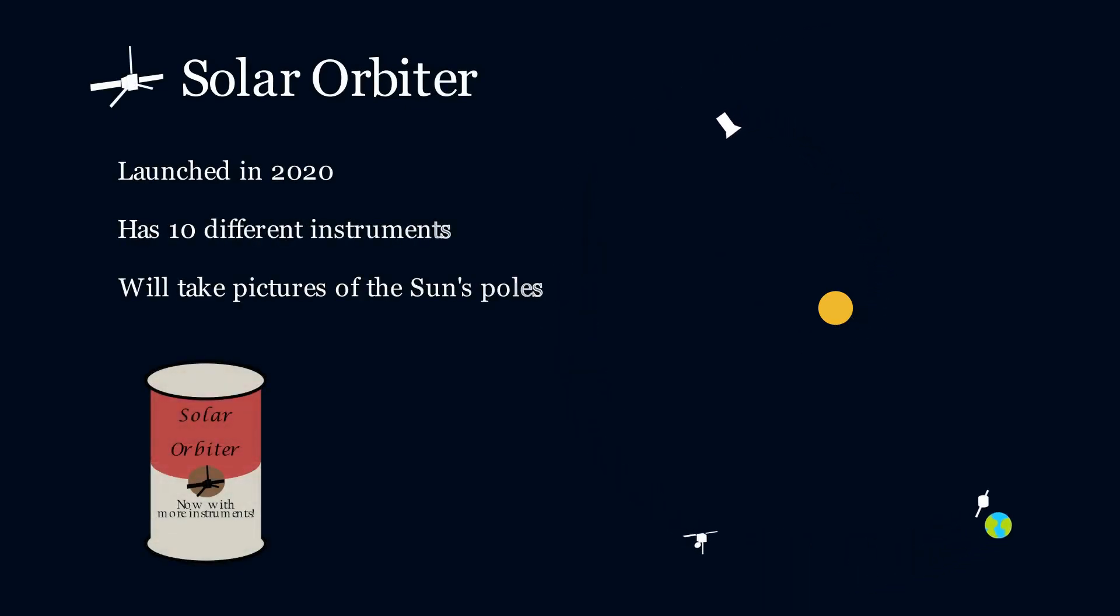The European Space Agency wanted to get in on the action, so launched Solar Orbiter in 2020. This does what it says on the tin and has a wide variety of instruments and telescopes.